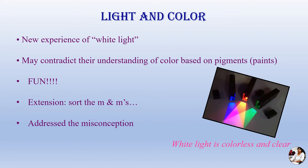Do you think white light is just one single light? It is not. It is made up of seven colors — that is violet, indigo, blue, green, yellow, orange, and red.